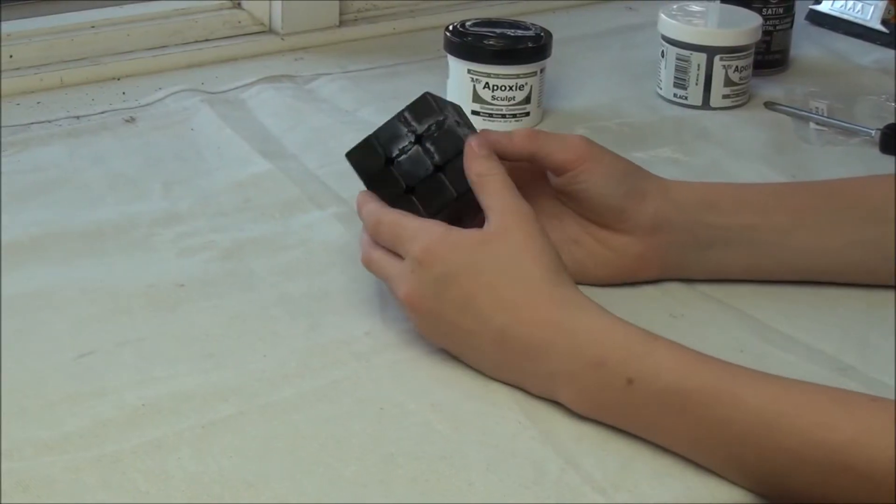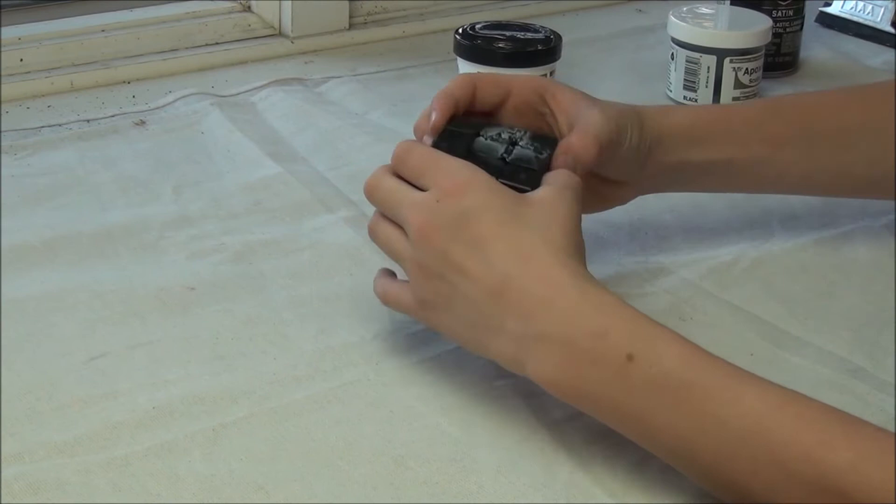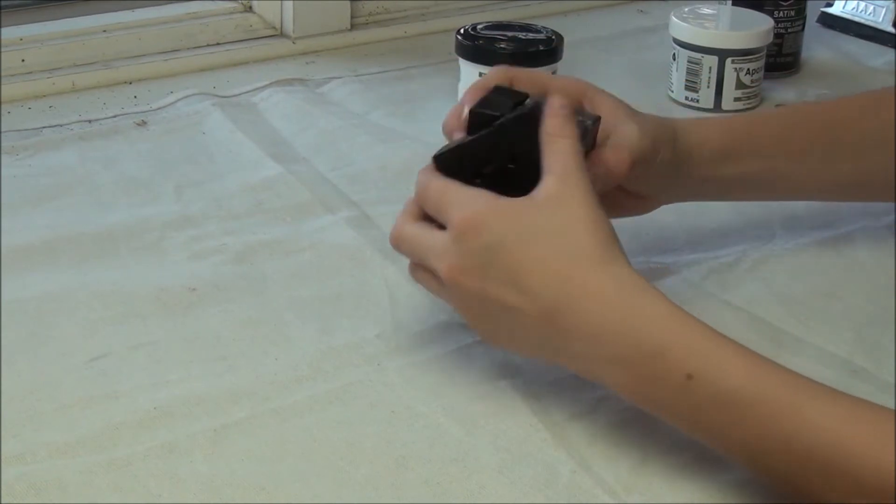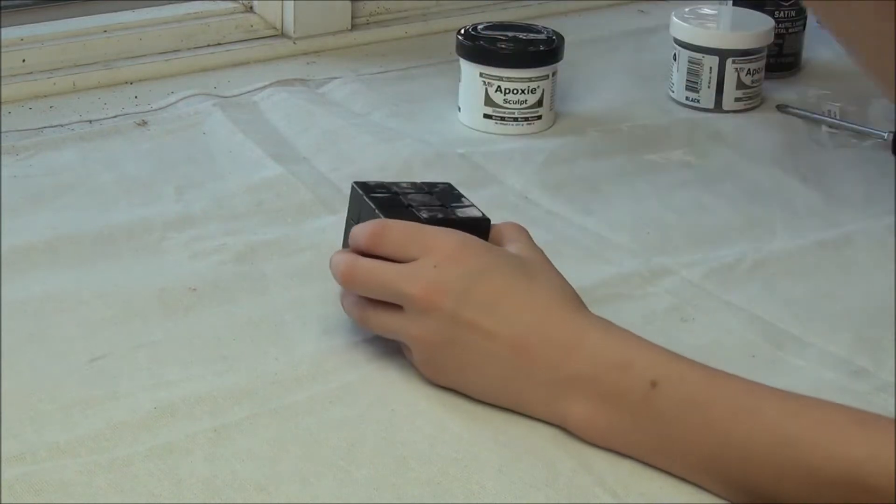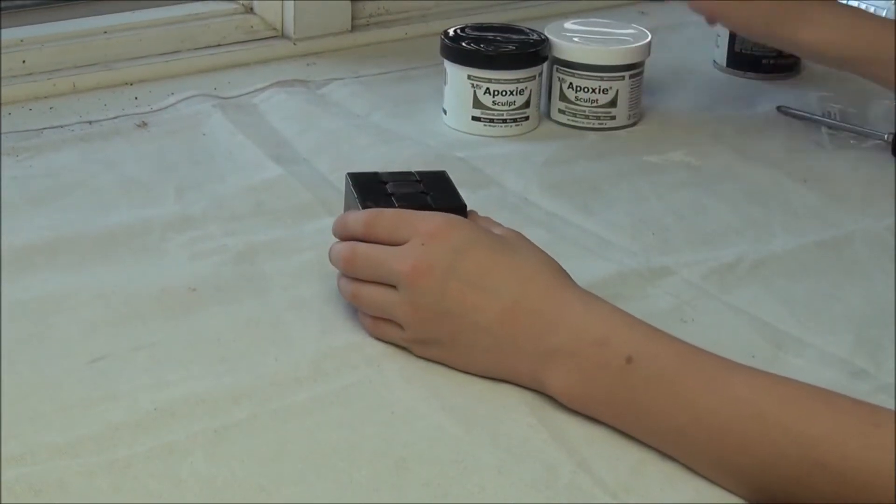Alright, so the super glue went ahead and dried and this is turning out very nice. These pieces are not coming apart, definitely sticking together, still turning very well. So the next part is going to be to disassemble this puzzle and fill it with epoxy sculpt.